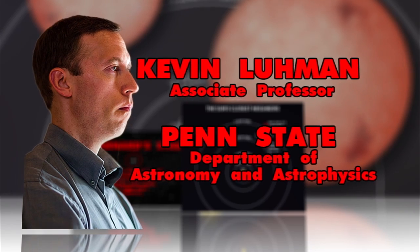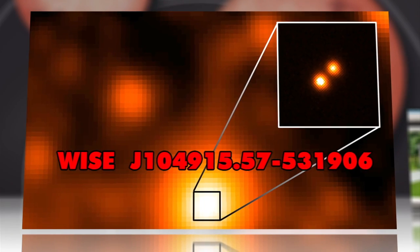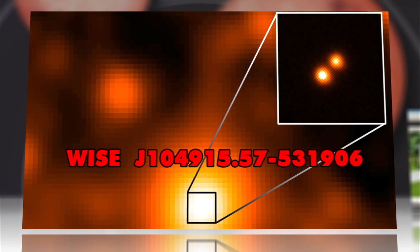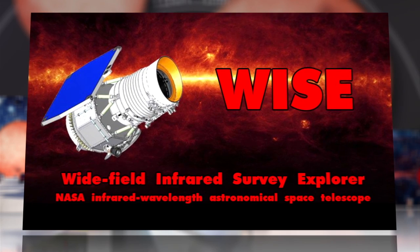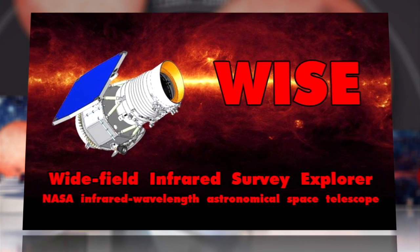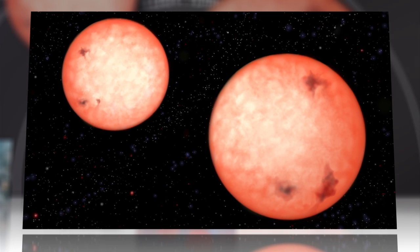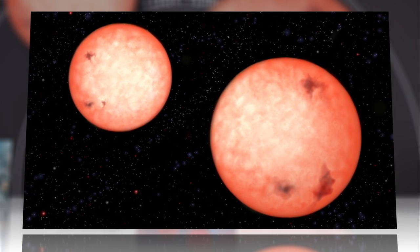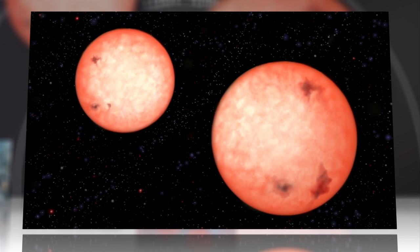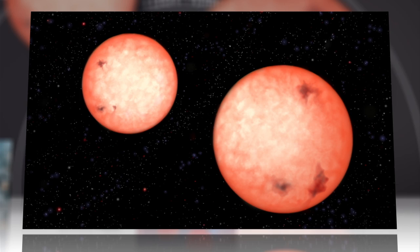Astronomer Kevin Luhmann discovered the binary star system by studying two infrared scans of the sky made by the WISE survey, launched in 2009. Comparative analysis of two brown dwarf stars orbiting each other about every 25 years revealed their position changed noticeably.